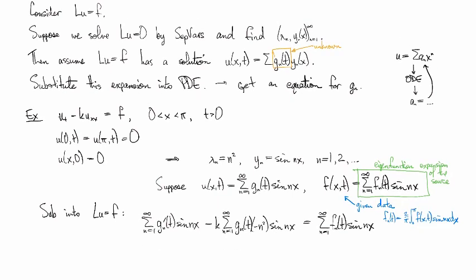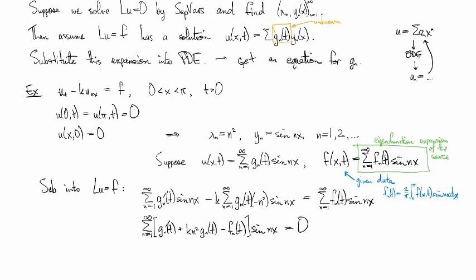Collecting this all together then, we have that the summation N equals 1 to infinity of GN prime plus kN squared GNT minus FNT sine Nx is equal to zero. But we know the sines are linearly independent because they're all mutually orthogonal. So, that allows us to extract the equation: GN prime plus kN squared GN equals FN.